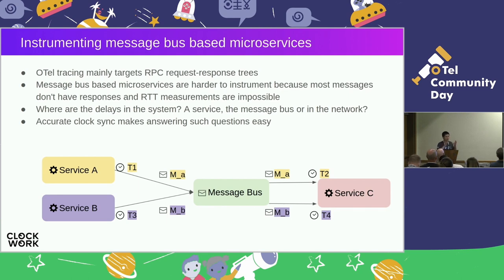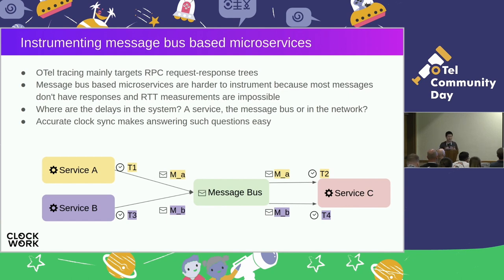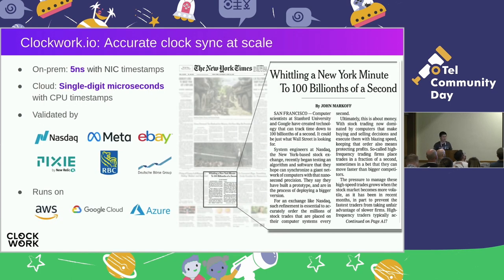The third use case is instrumenting message-based microservices. There are two classes of microservices: RPC-based and message-based. In RPC-based systems, every request gets a response, so you can measure round-trip times and get a sense of latency. However, in message-based systems there are no requests and responses — messages simply flow through the system, and it's very hard to pin down where the latencies are. With synchronized clocks, we can simply measure timestamps at different stages and determine whether delays are happening in the network, the service, or the message bus.